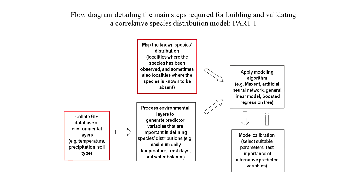We've already touched on a number of the considerations in some of the discussions this morning, but I'm going to give you some examples and flag some data sources and the kinds of things that you should be thinking about. We're going to talk about how we get some records of where we find the species, and then we're going to talk a little bit about the environmental data sets that we might use.